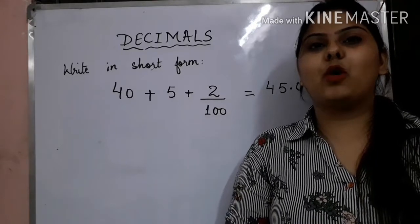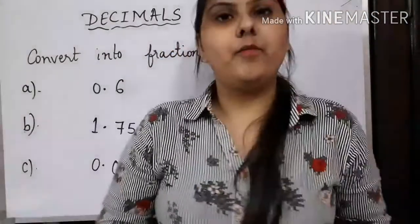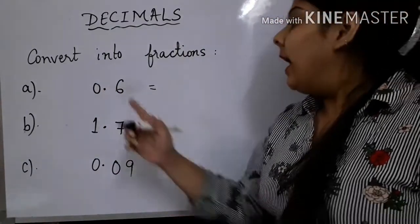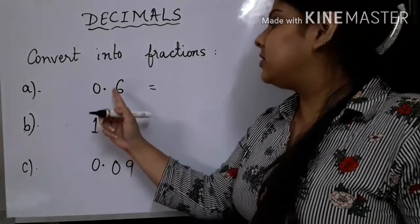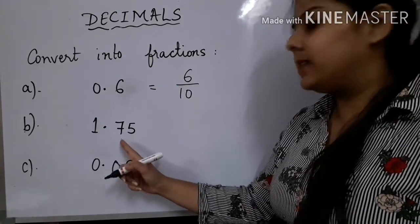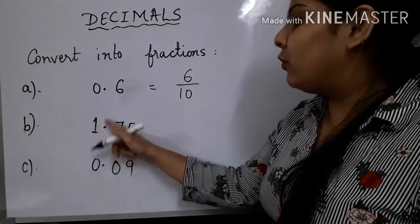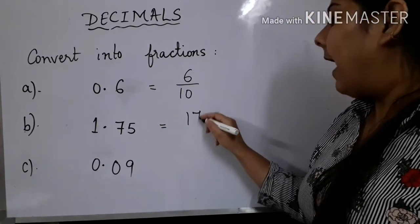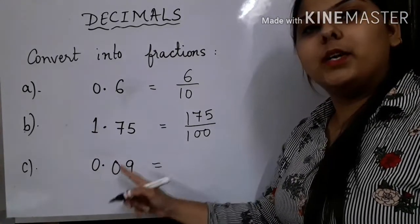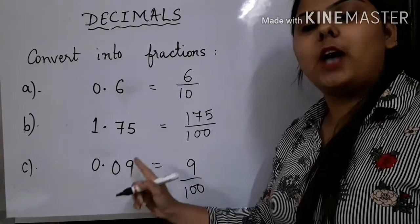I hope all the basic concepts of this chapter are clear to you. In order to convert a decimal into a fraction, always refer to the decimal places — the number of digits after a decimal. If there is only one decimal place, like 0.6, it would be represented as 6 upon 10. If there are two decimal places, like 1.75, remove the point and write it as 175 upon 100. For 0.09, the fraction would be 9 upon 100 because there are two digits after the decimal.